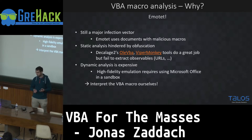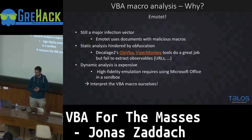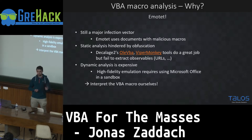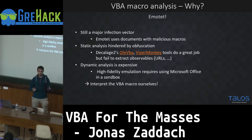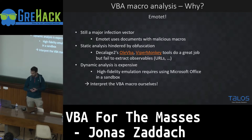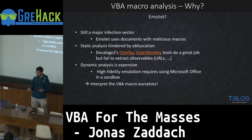Now I've answered why macros are still around, but why are they used by malware? Emotet is a score that has been around since 2014. Initially it was a banking trojan, and then it evolved to a malware delivery platform. One way Emotet infects machines is via Office macros. We could dump the code behind the document to extract the macros and see what they're doing.